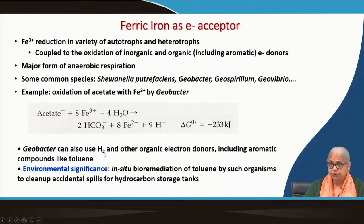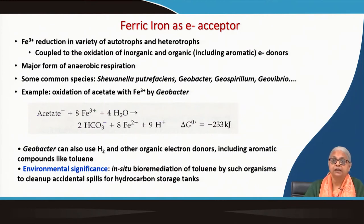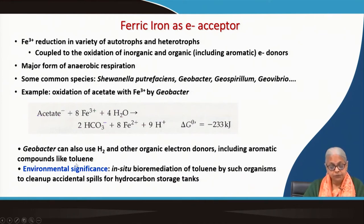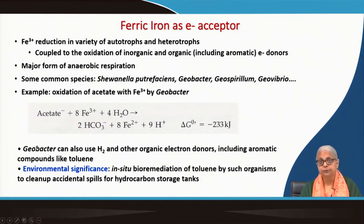Geobacter can also use hydrogen and other organic electron donors, including aromatic compounds like toluene, benzene, and xylene. These are very common petroleum-based compounds found around petrol pumps and other petroleum-storing areas where tanks may have leaks. The environmental significance is that in situ bioremediation of toluene is possible using these organisms to clean up accidental spills at oil refineries, petrol pumps, and other petroleum storage sites.